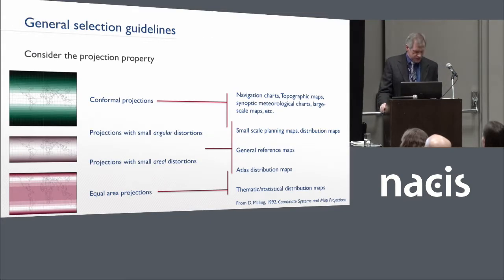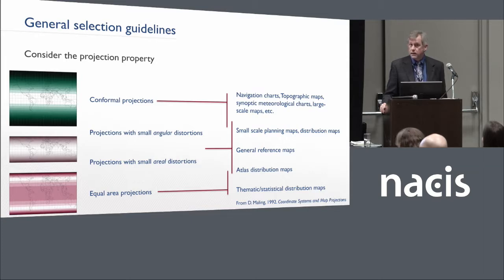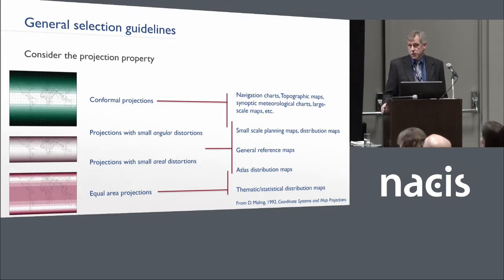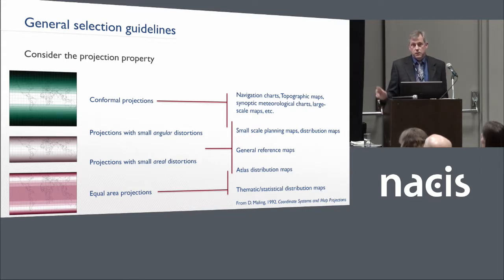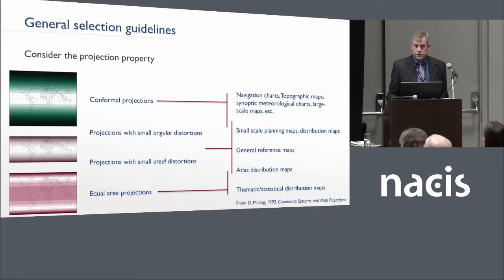There are some general selection guidelines that exist. This one happens from mailing. If you look on the left-hand side, if you're familiar with the projection properties, you sort of weed your way through to the map use task, or work in reverse — if you're familiar with the map use task, then you weed your way back to the property. But it's not very specific; it doesn't really help you choose a single projection, much less make the decision about which parameters to choose.